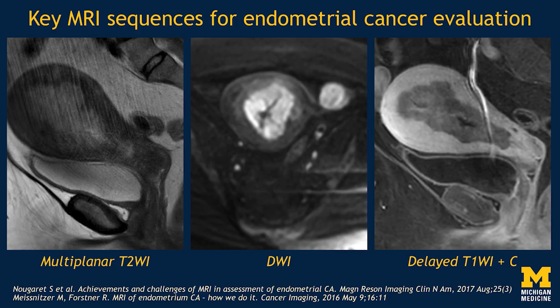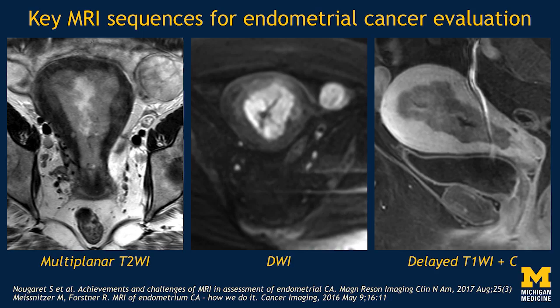The key MRI sequences for endometrial cancer evaluation are multiplanar T2, diffusion, and a dynamic or multiphasic post-contrast acquisition. On T2-weighted imaging, endometrial tumors are brighter than myometrium and darker than the normal endometrium. Here we see a little strip of normal endometrium in the middle on this axial image, and we see tumor out on both lateral margins — an intermediate gray that some people call 'evil gray.' That's the signal characteristic these masses will have on T2-weighted imaging.